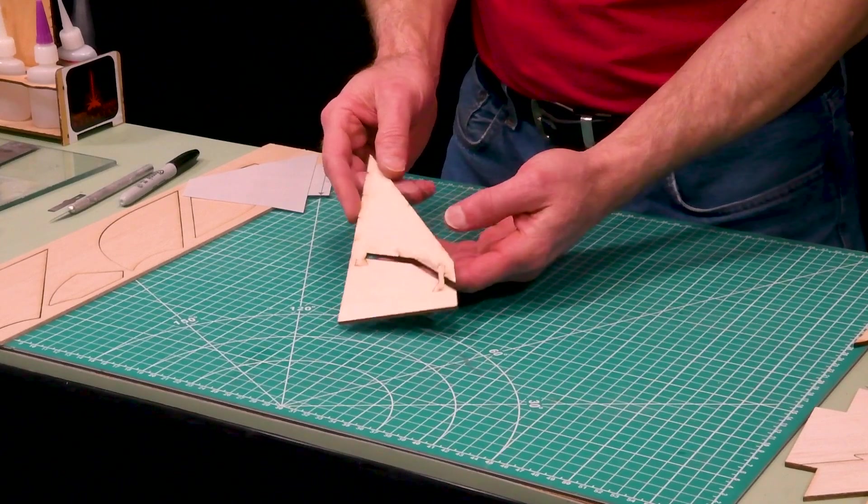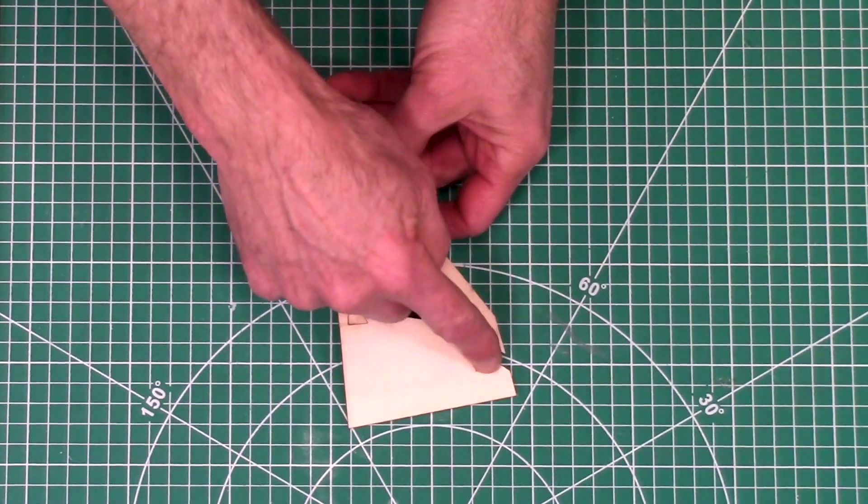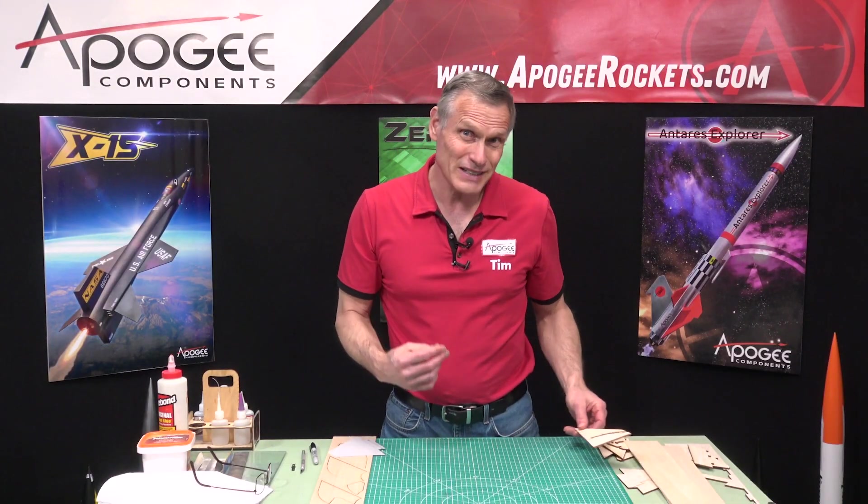This fin right here, as you can see, is made out of three pieces. There's this piece here, this piece here, and this piece here. Why do we do that? Well, there's basically two reasons.